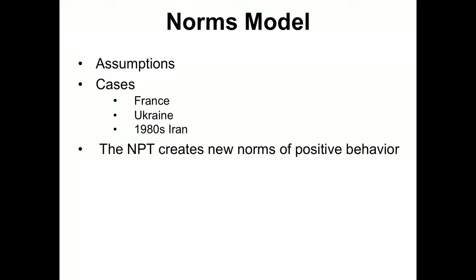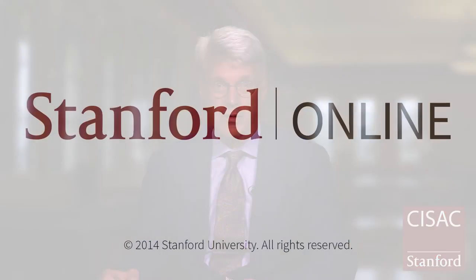Ukraine and other countries might be a good example of a different kind of norm. The nonproliferation treaty could create, instead of the norm that any country that can should get a nuclear weapon for prestige, a new norm of positive behavior. The NPT says there are new norms — you can follow the agreements you sign, and if you develop nuclear weapons, you'll be in the bad category like North Korea or Iran. The NPT then creates a new norm suggesting that strong states are states that follow their commitments.